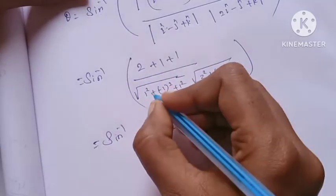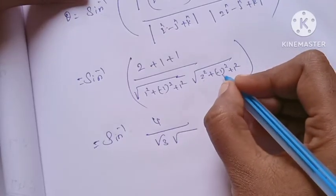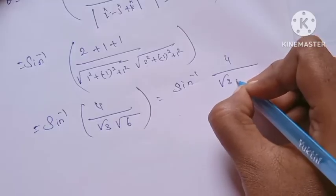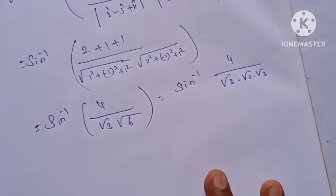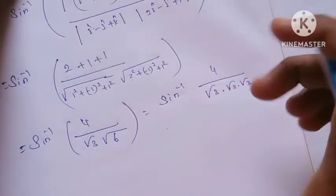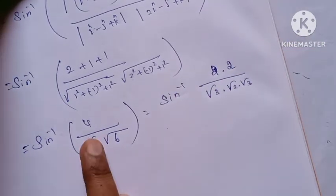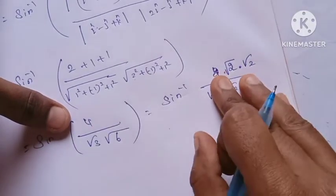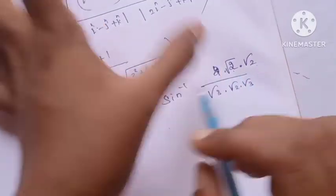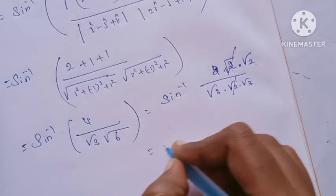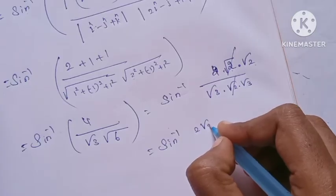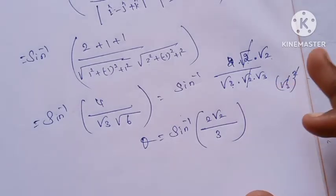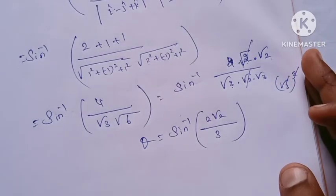Continuing the calculation: |n| = root(1 + 1 + 1) = root 3. |b| = root(4 + 1 + 1) = root 6. The dot product is 4. So we get sin inverse of 4 over (root 3 times root 6), which simplifies — root 3 into root 6 equals root 18 equals 3 root 2. So theta equals sin inverse of 2 root 2 by 3. That is the answer.